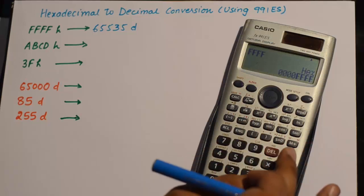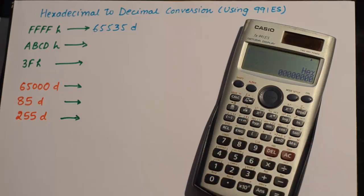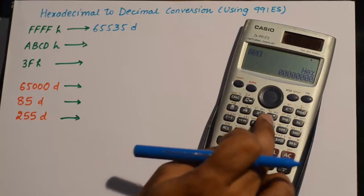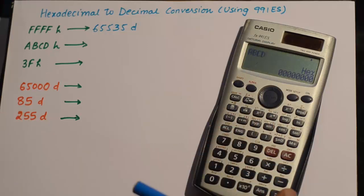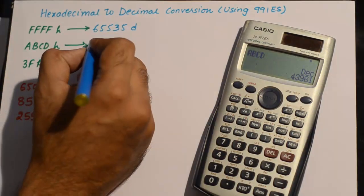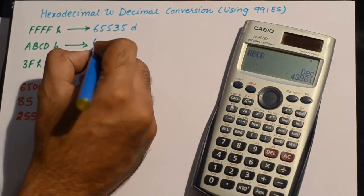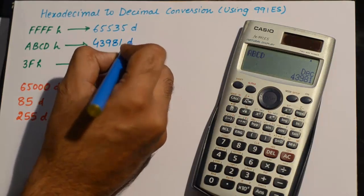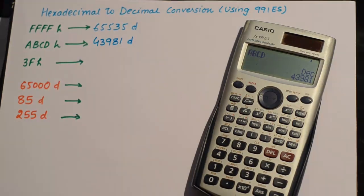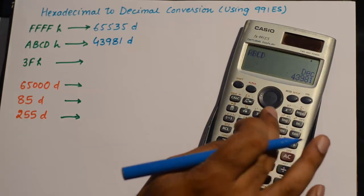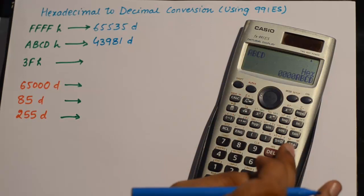I'll clear it, type ABCD, then press equals and then decimal — it turns out to be 43981 decimal. Then I go back to hexadecimal and clear it.